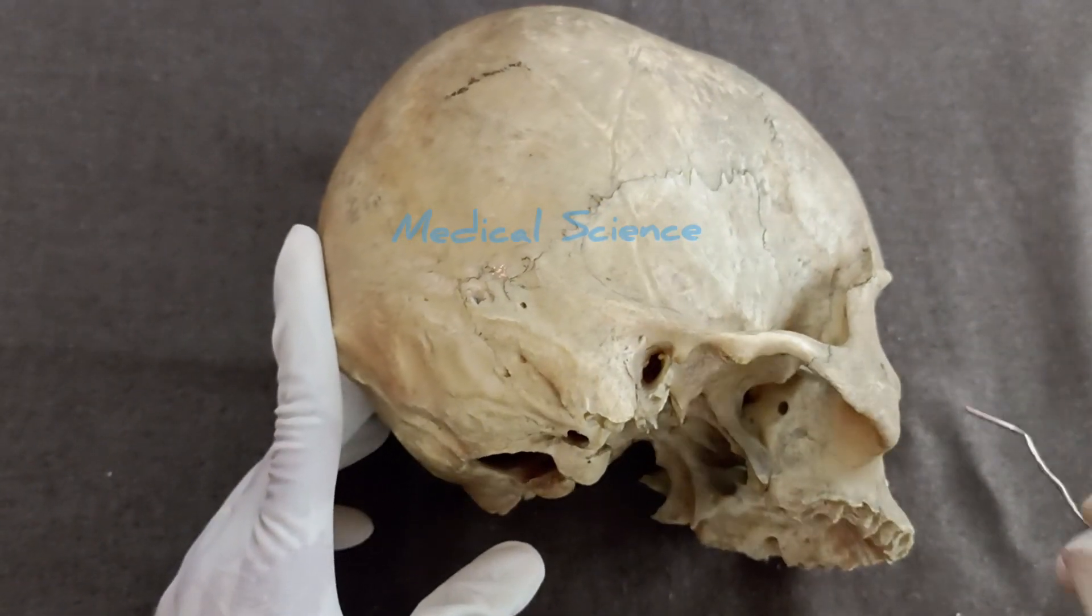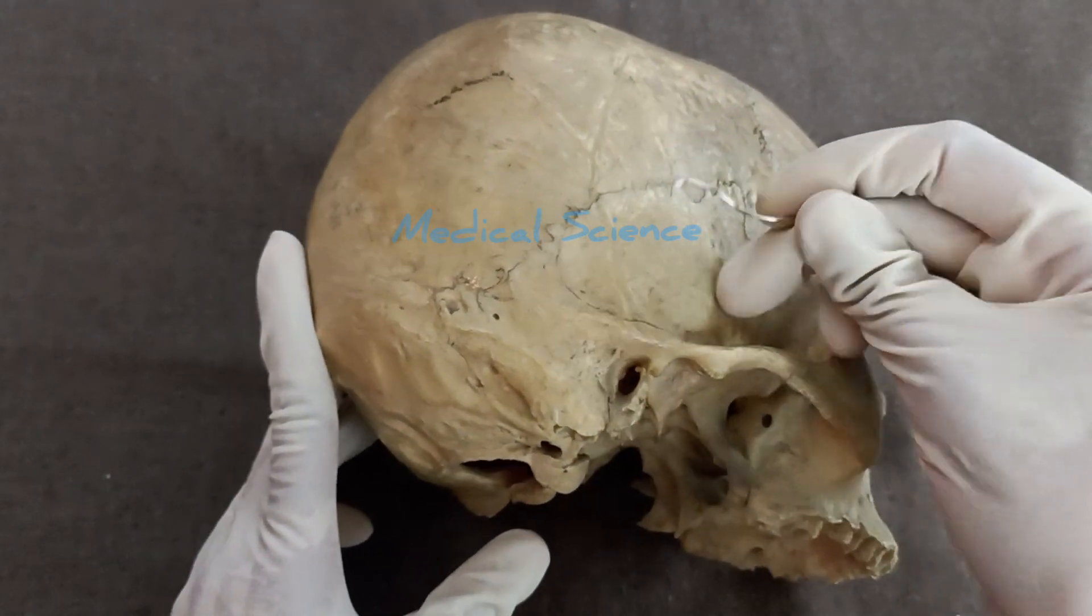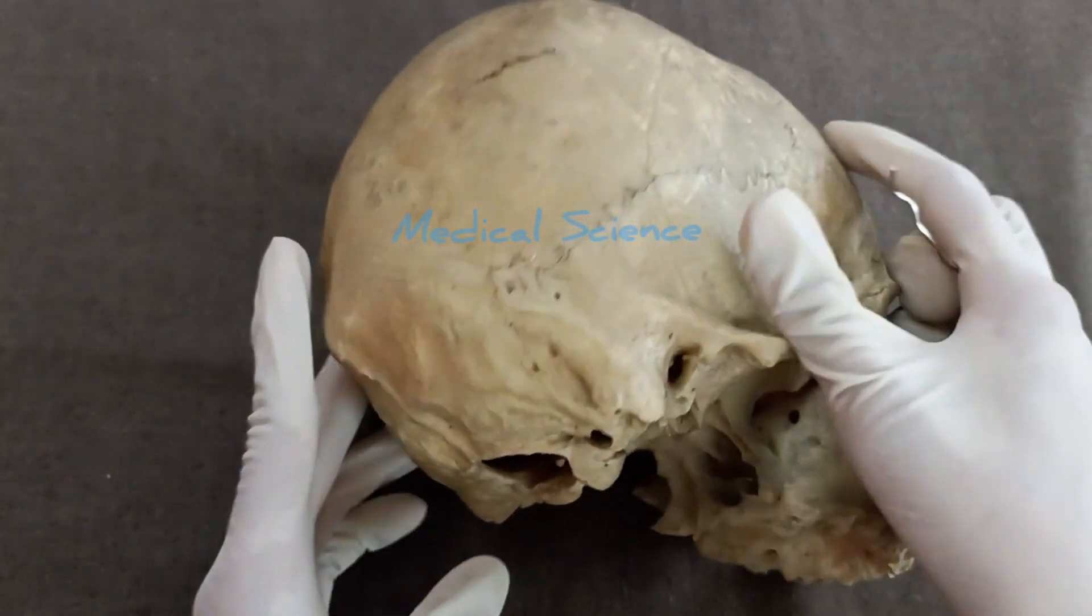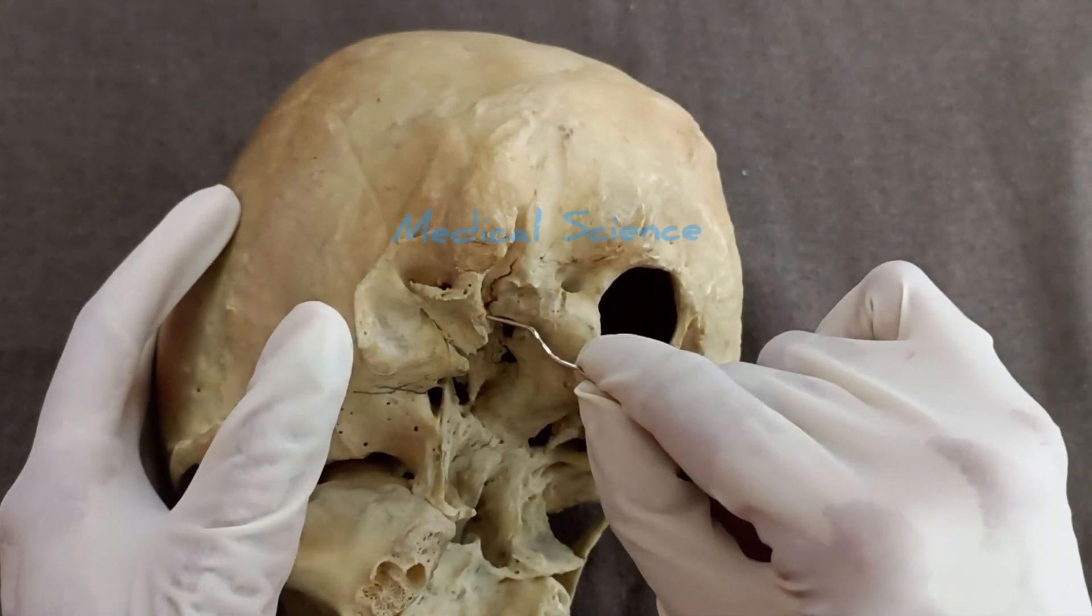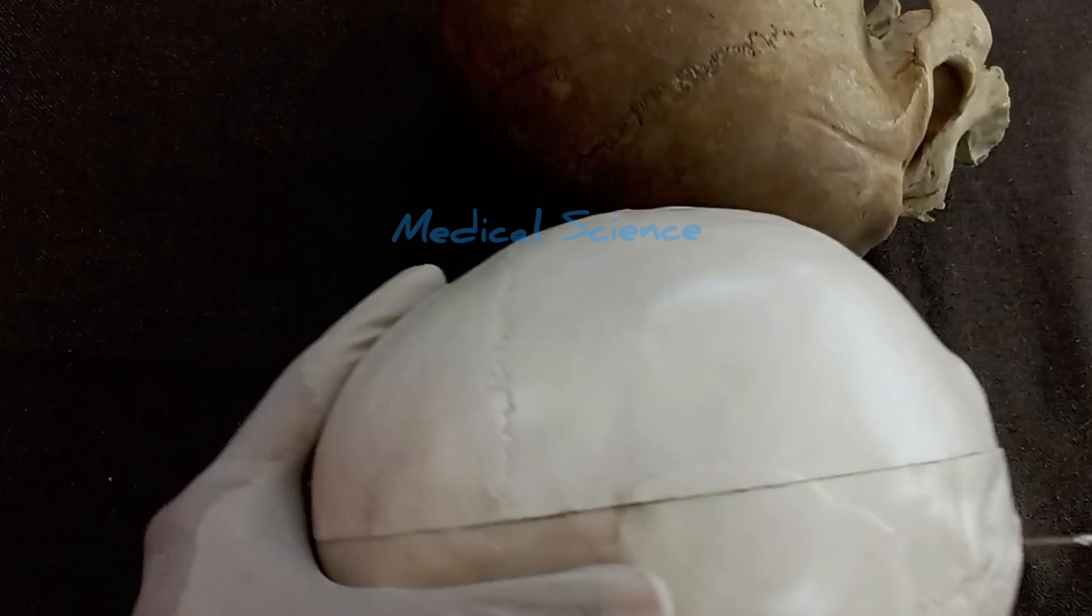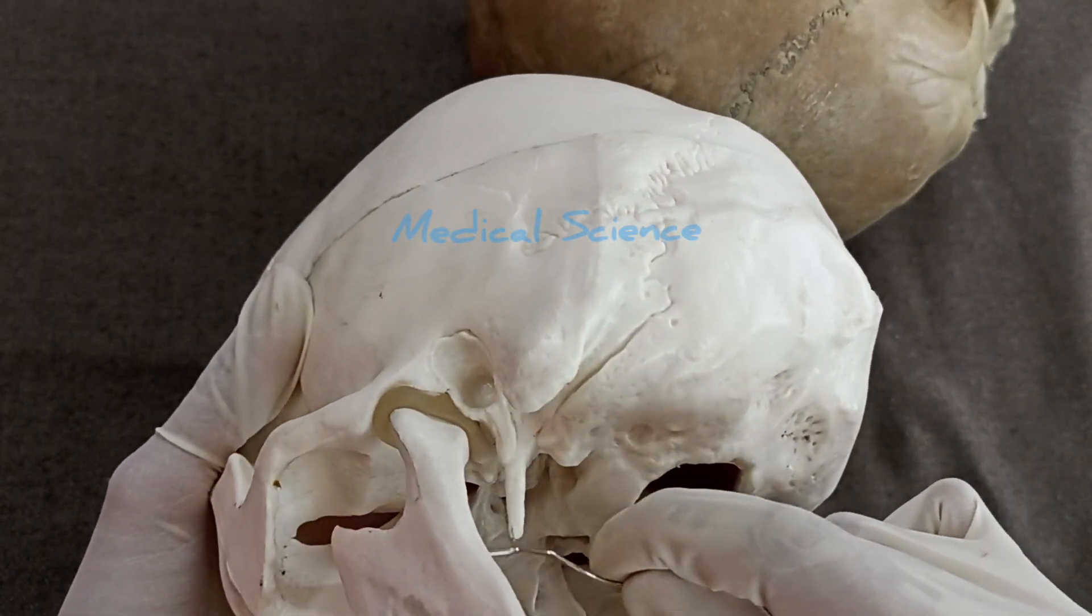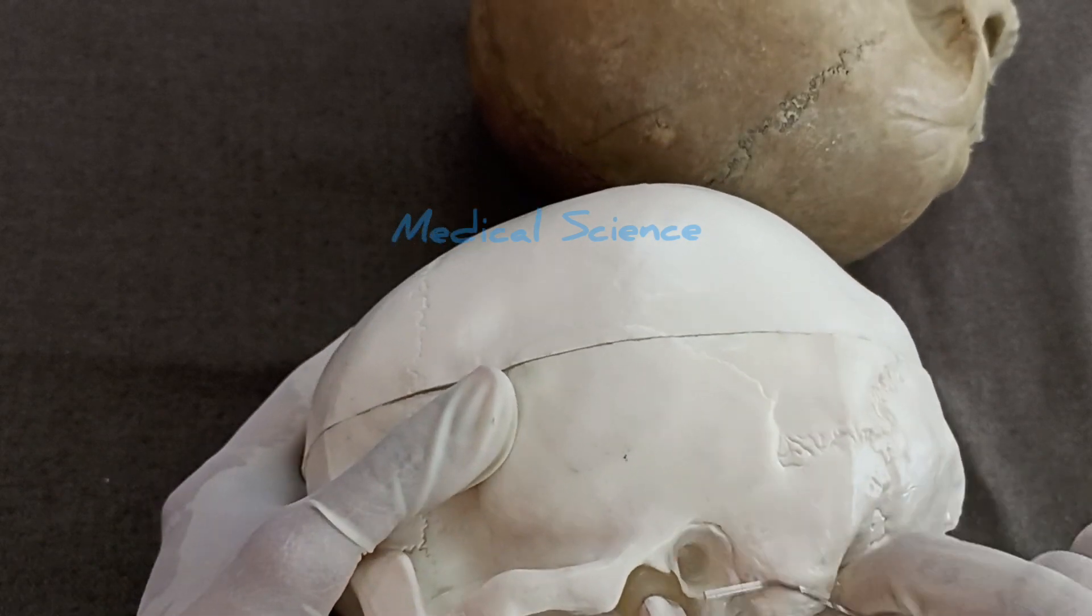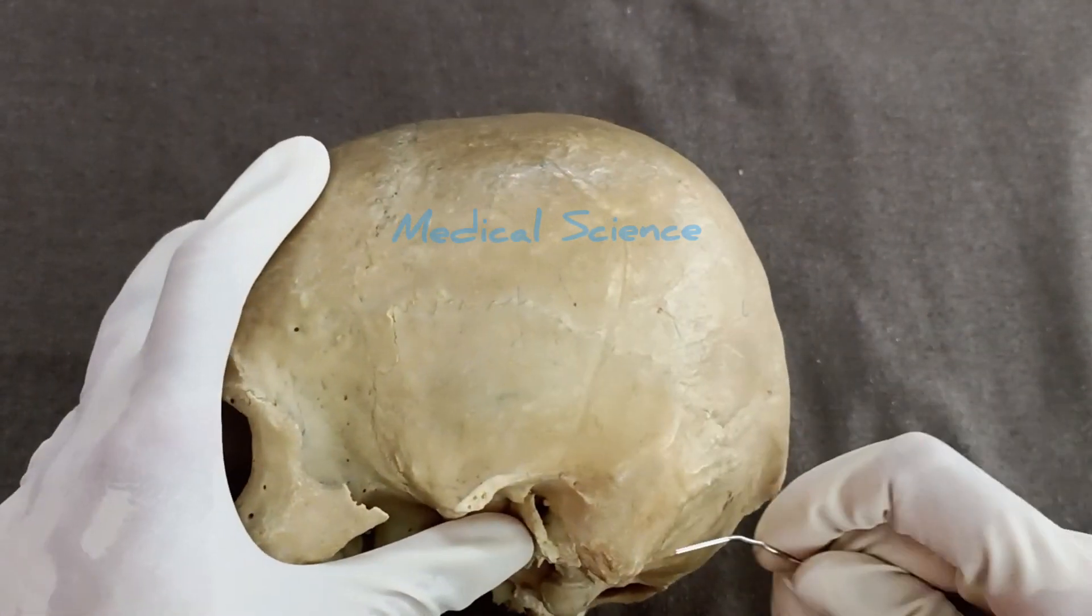Now come to the stylomastoid region. The stylomastoid region contains two parts: a mastoid part and a styloid process, which is broken here, but in another bone you can see this is the mastoid part and this is the styloid part. First, I will come to the mastoid part.